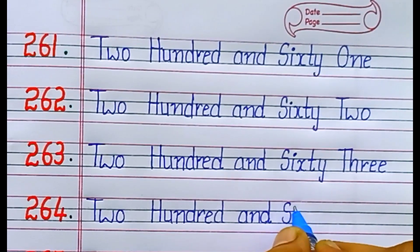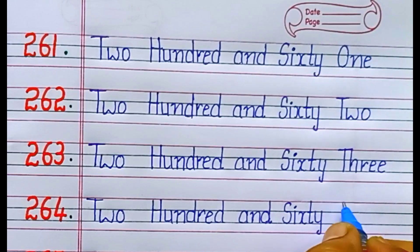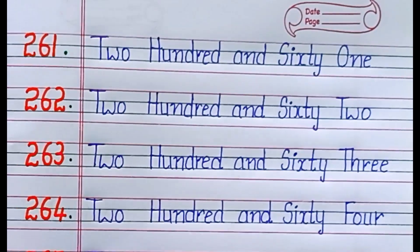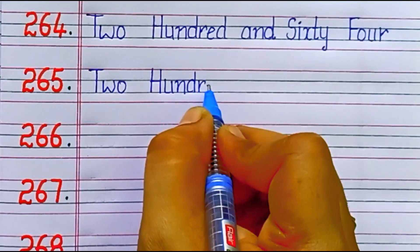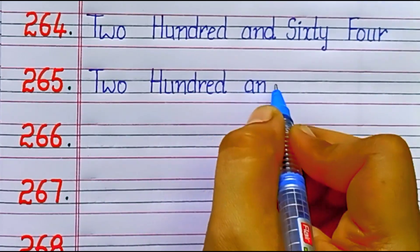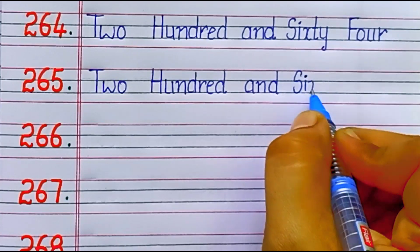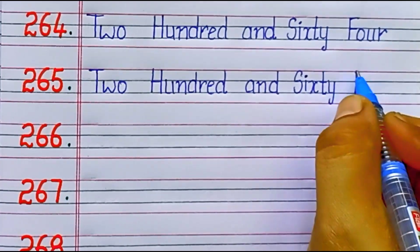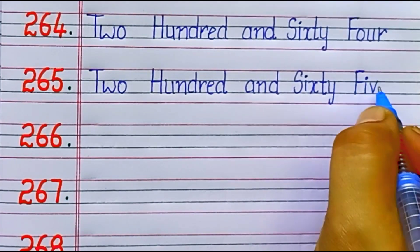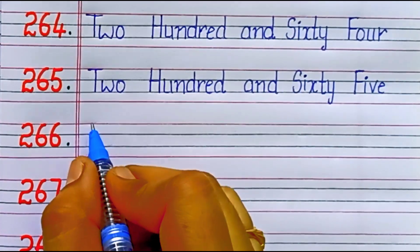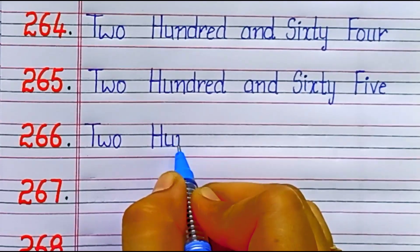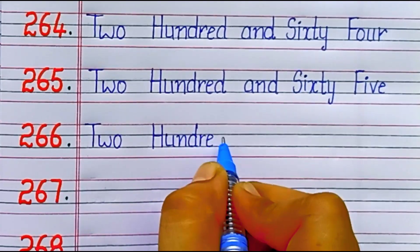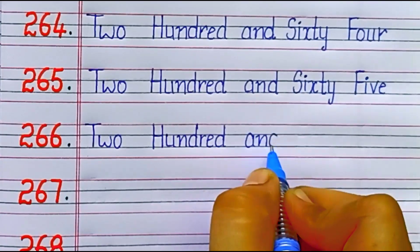Two hundred and sixty five. S-I-X-T-Y F-I-V-E. 65. Two hundred and sixty six. S-I-X-T-Y S-I-X. 66.